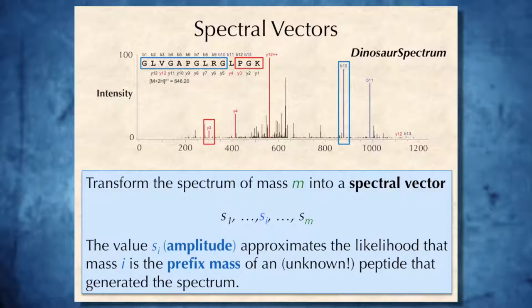To address this challenge, mass spectrometrists came up with the concept of spectral vector, a transformation of a spectrum of mass m into an m-dimensional vector with components S1, Si, Sm.